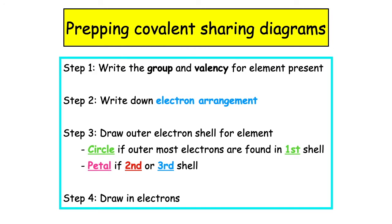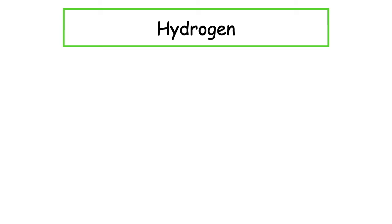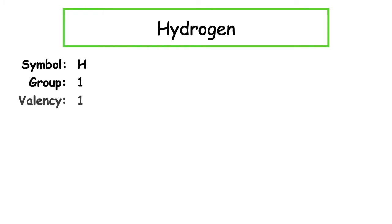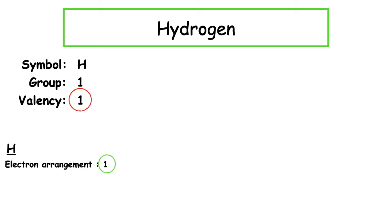Step three is the most important: draw the outer electron shell for the element. Remember, we draw a circle if the outermost electrons are in the first energy level, and a petal if we're looking at the second, third, fourth, or fifth shell. Step four: draw in the electrons. Let's look at hydrogen, the first element in the periodic table. The chemical symbol for hydrogen is H, found in Group 1 with a valency of 1.